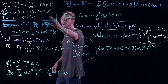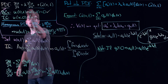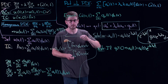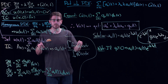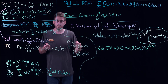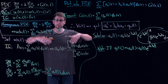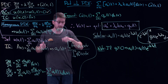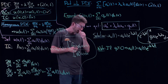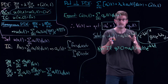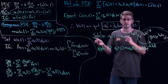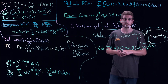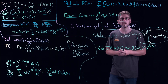In the next video, we're going to look at what happens if you have inhomogeneous boundary conditions — for example, if you're forcing the temperature at the ends of the rod, or if you have a vibrating string and you're forcing the string on one end. You can also apply these methods of eigenfunction expansion to still solve these PDEs. I'll see you all in the next video.